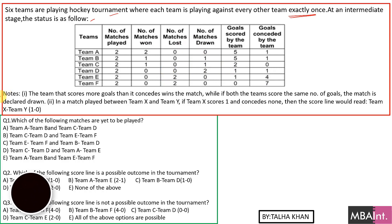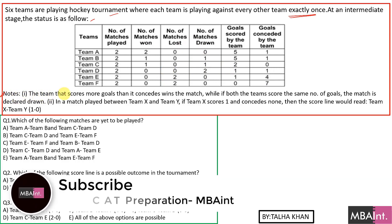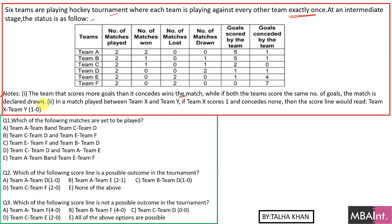Some points to be noted: Point one — the team that scores more goals than it concedes wins the match, which is very obvious. If both teams score the same number of goals, the match is declared drawn. Point two — in a match played between team X and team Y, if team X scores one and concedes none, the score line reads as team X, team Y: one comma zero.